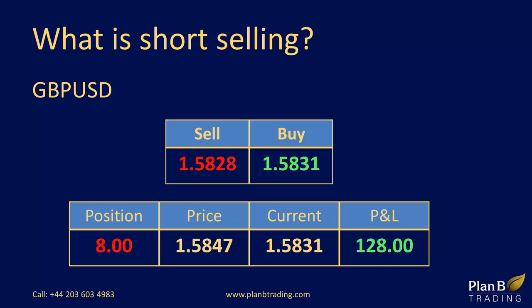Now up to 16 pips of profit, then up to 23 pips. This is my target on the trade: 25 pips. Let's close the trade now, buying the currency at 158.22 and bank £200 profit.